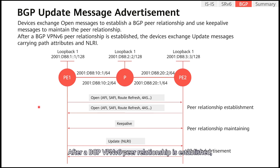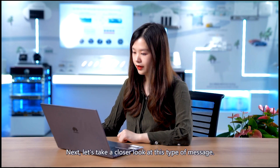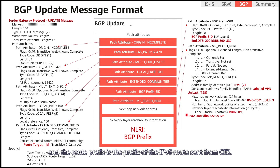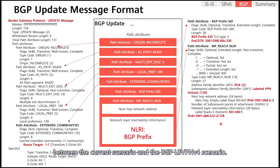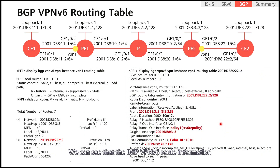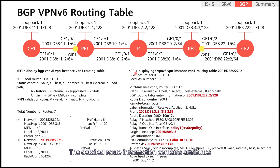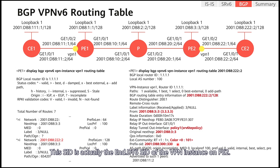After a BGP L3 VPN v6 peer relationship is established, the devices exchange update messages carrying path attributes and NLRI. Let's take a closer look at this type of message. In the current scenario, the BGP L3 prefix SID carries an End.DT6 SID. The primary address family is IPv6, and the root prefix is the prefix of the IPv6 route sent from C2. These are the main update message differences between the current scenario and the BGP L3 VPN v4 scenario. The BGP L3 VPN v6 route information is consistent with the information carried in the BGP L3 update message. The address refers to the host IPv6 address and 128 refers to the mask length of the host address. The detailed route information contains attributes such as RDs and RTs and the prefix SID carried by the route, which is actually the End.DT6 SID of the VPN instance on P2.